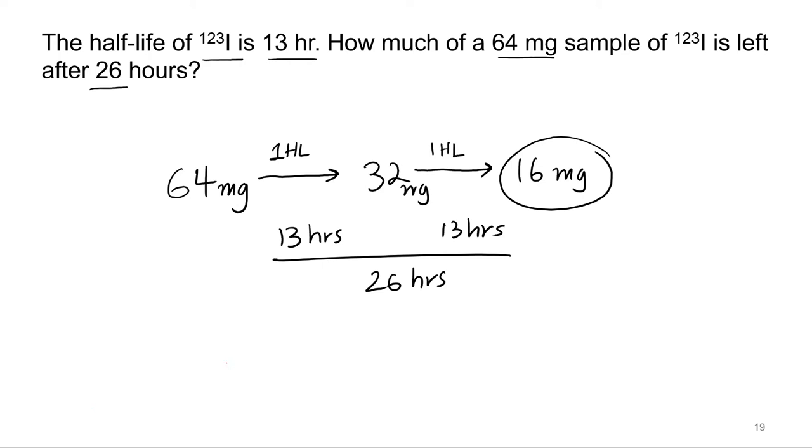Or you can take out your amount and multiply it by one over two raised to the number of half-lives. So two half-lives, one fourth, three half-lives, one eighth. Number of half-lives.